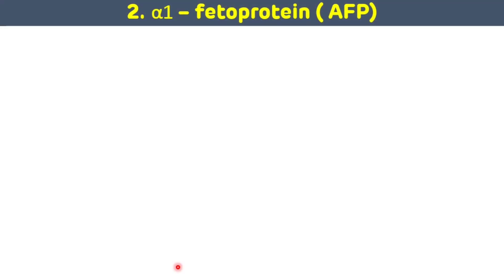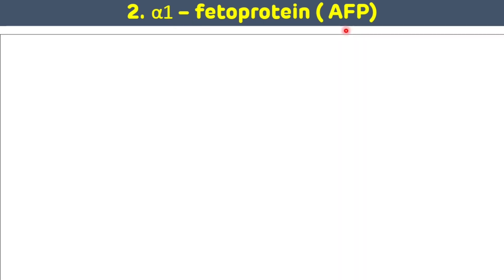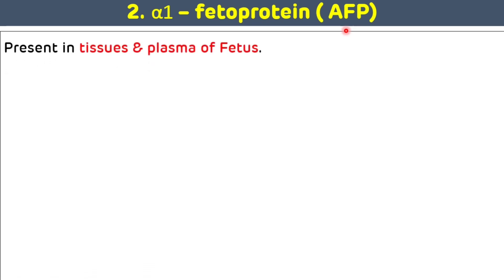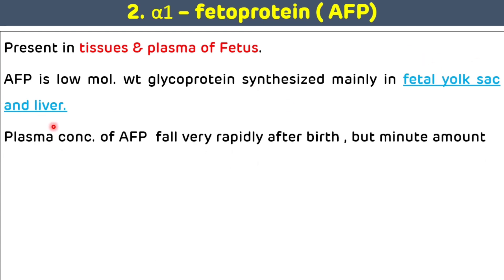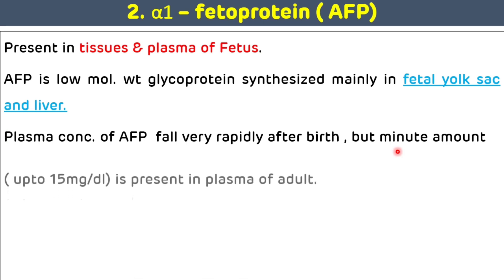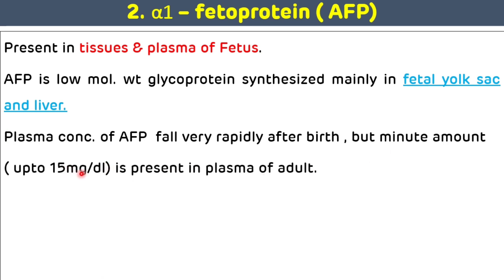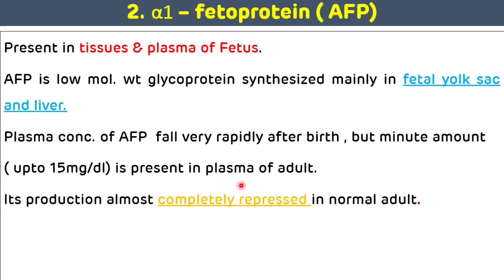Another example of alpha 1 globulin is alpha 1 fetoprotein, also known as AFP. AFP is present in the tissues and plasma of the fetus. It is a low molecular weight glycoprotein synthesized mainly in the fetal yolk sac and in the liver. Plasma concentration of AFP falls very rapidly after birth, but a minor amount — up to 15 milligrams per deciliter — is present in the plasma of adults. Its production is almost completely repressed in normal adults.